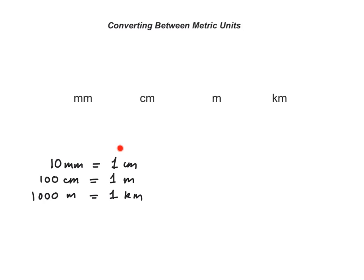In other words, what we are saying is that in 1 centimetre there are 10 millimetres, in 1 metre there are 100 centimetres, and in 1 kilometre there are 1000 metres. Now how do I convert millimetres into centimetres, and centimetres into metres, and metres into kilometres? Let's do these conversions.